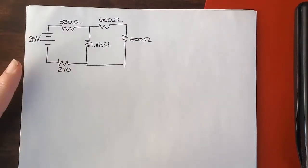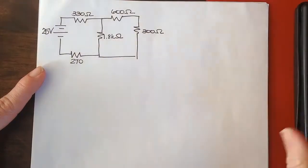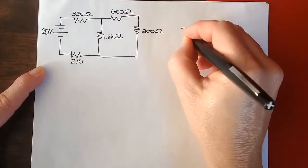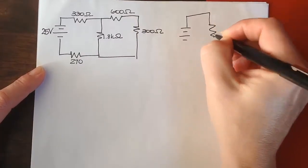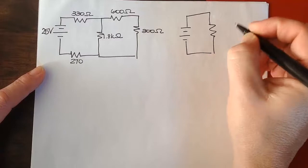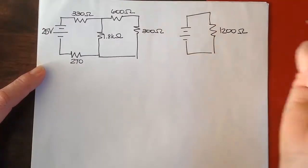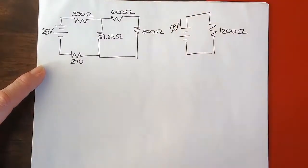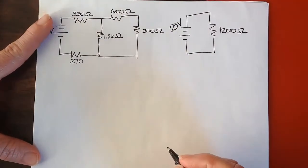In the previous video, we had reduced this combination, parallel and series circuit, to an equivalent circuit that is this. And we went through the procedure for combining those resistors. Now, to fully describe this circuit, we need to go ahead and begin some calculations.